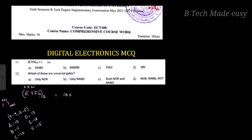16 raised to 0, multiply by 6. 16 raised to 1 — F is 15. 16 squared — next digit is 7. 7 into 16 squared. Plus F, which is 15, into 16 raised to 1, that means 16. Plus 6 into 16 raised to 0. Any number raised to 0 is equal to 1.